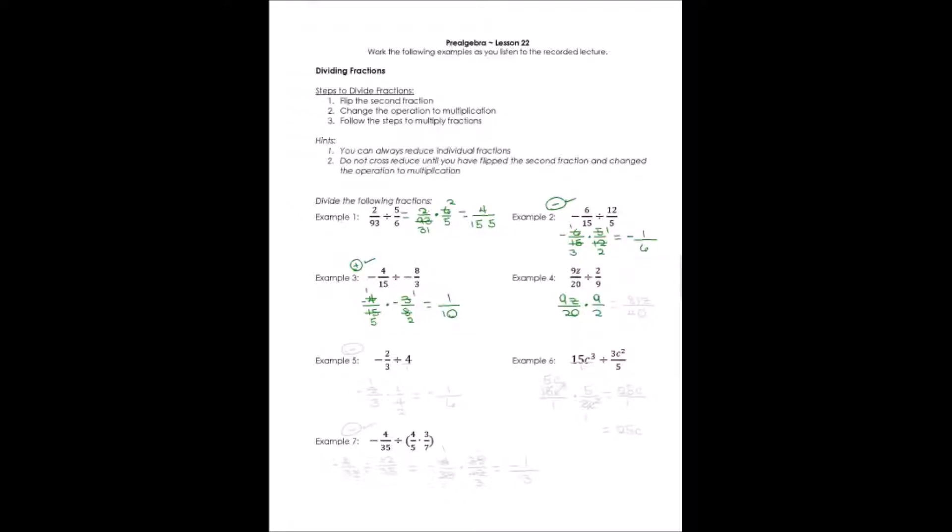Nothing is going to reduce or cross-reduce. We're stuck with just multiplying numerator times numerator. 9 times 9z is 81z. And denominator times denominator, 20 times 2 is 40, and that's our lowest form.